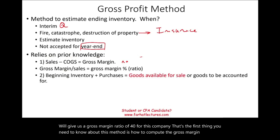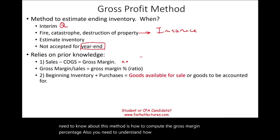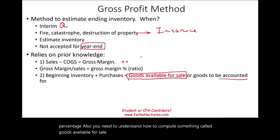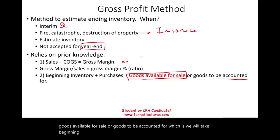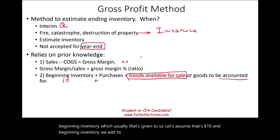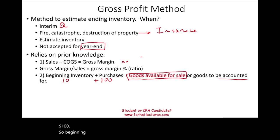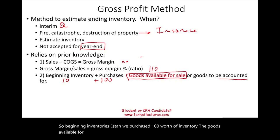You also need to understand how to compute goods available for sale, or goods to be accounted for. We take beginning inventory — which is usually given to us, let's assume $10 — and add purchases, let's assume $100. So beginning inventory of $10 plus purchases of $100 gives us goods available for sale of $110.